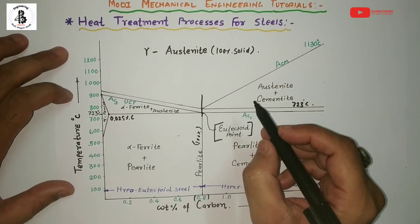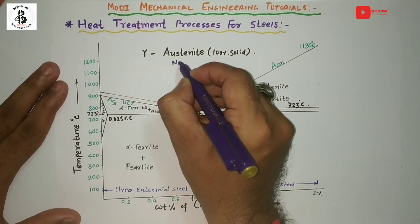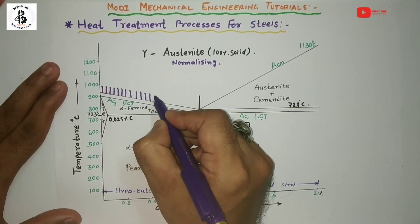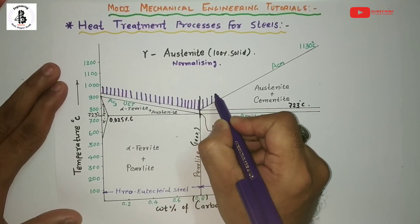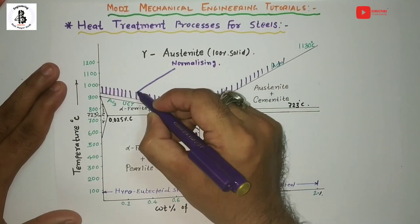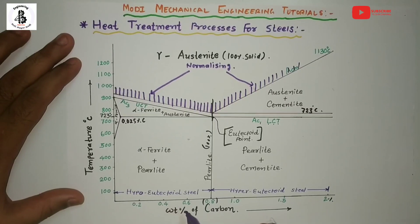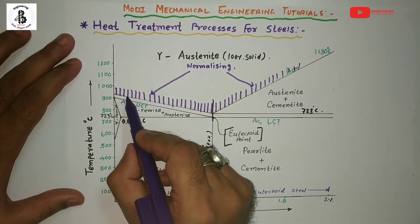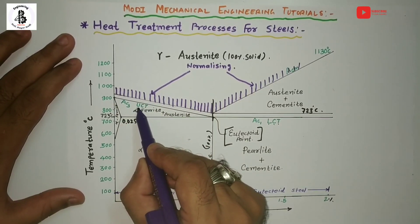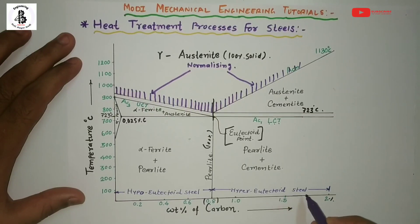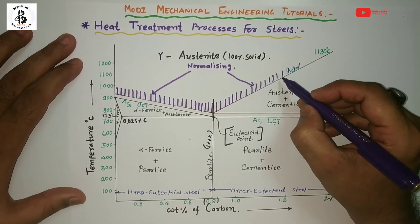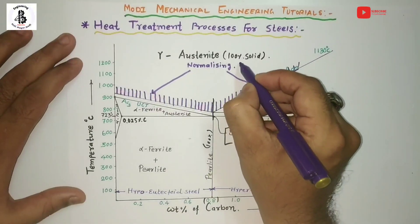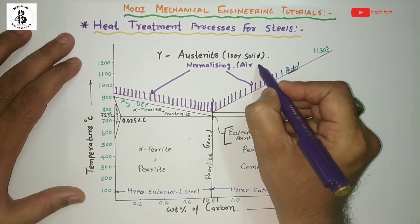Today we will only be discussing the normalizing process performed on steels. As shown in the diagram, the normalizing process is defined as heating hypo-eutectoid steel to 40–50°C above the AC3, or upper critical temperature, and for hyper-eutectoid steel similarly 40–50°C above the ACM temperature, followed by normal cooling — air cooling in the environment.